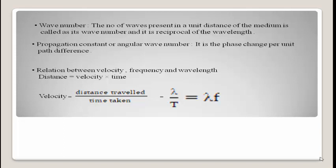We can rewrite λ/T as λ × (1/T). Since frequency f = 1/T, substituting gives: velocity = λ × f. So, the final equation is V = fλ — wave velocity equals frequency multiplied by wavelength. This equation contains velocity, frequency, and wavelength, which is the required relation.